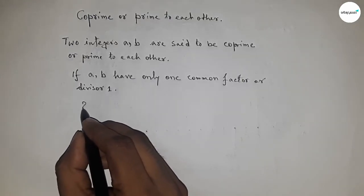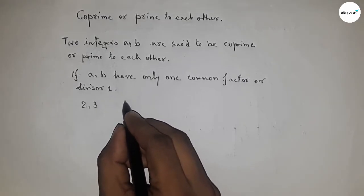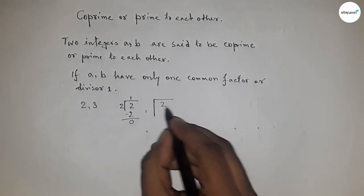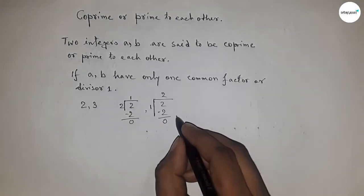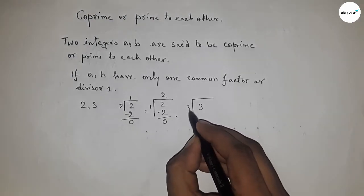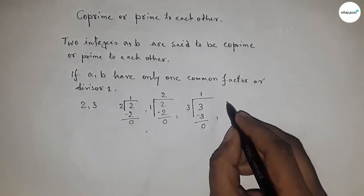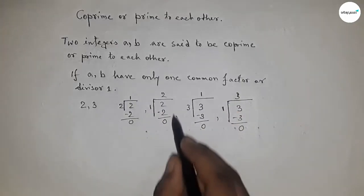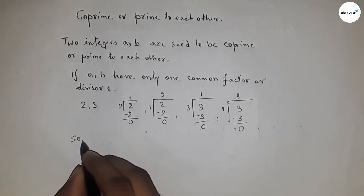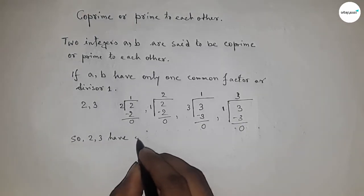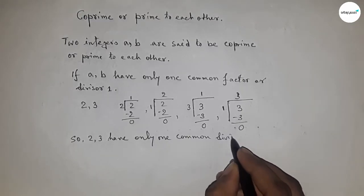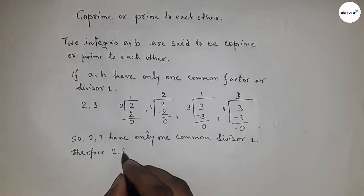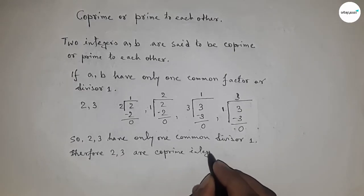Let's explain this by taking an example: 2 and 3. 2 can be divided by 2 itself and also by 1. 3 can be divided by 3 itself and also by 1. So 3 has 2 divisors: 3 and 1. The common divisor is 1, so by definition, 2 and 3 are co-prime integers.